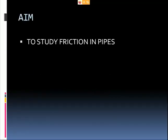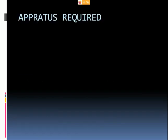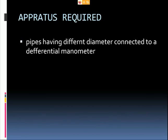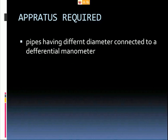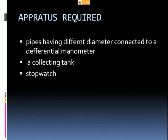The aim of our experiment is to study the friction in pipes. The apparatus required for this experiment includes pipes having different diameters connected to a differential manometer, a collecting tank, a stopwatch, and a scale.